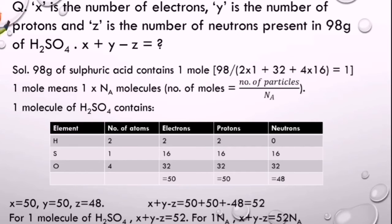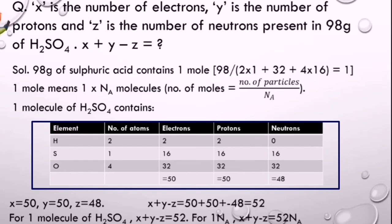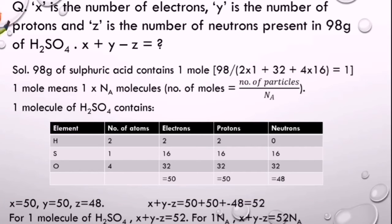Let's see for one molecule the number of electrons, protons, and neutrons in sulfuric acid. There are 50 electrons, 50 protons, and 48 neutrons in one molecule. For one molecule, x plus y minus z is 52. So for NA molecules we would have 52 NA, and that's the answer.